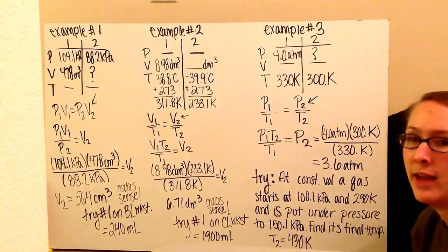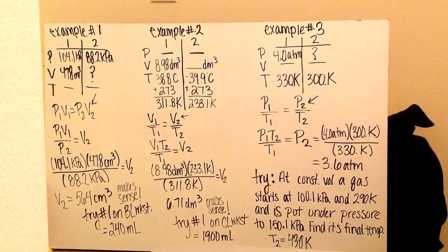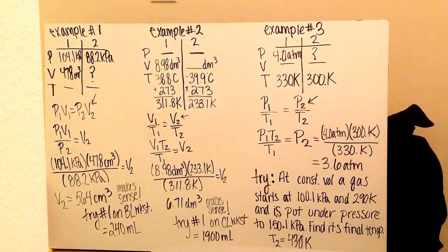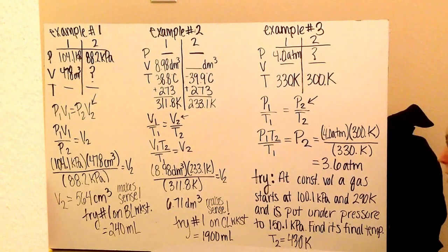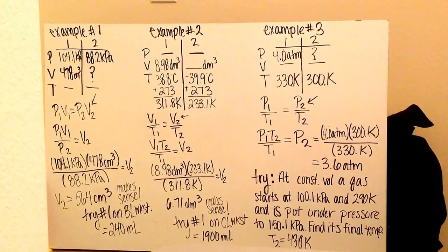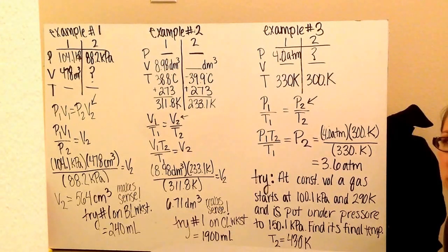I rearrange by multiplying both sides by T2, giving me P1 times T2 divided by T1 equals final pressure. Plugging in: 4 atmospheres times 300 Kelvin divided by 330 Kelvin gives an answer of 3.6 atmospheres. Now try the example on the board: at a constant volume, a gas starts at 100.1 kilopascals and 290 Kelvin, and is put under pressure to 150.1 kilopascals. Find its final temperature. You will get 430 Kelvin.